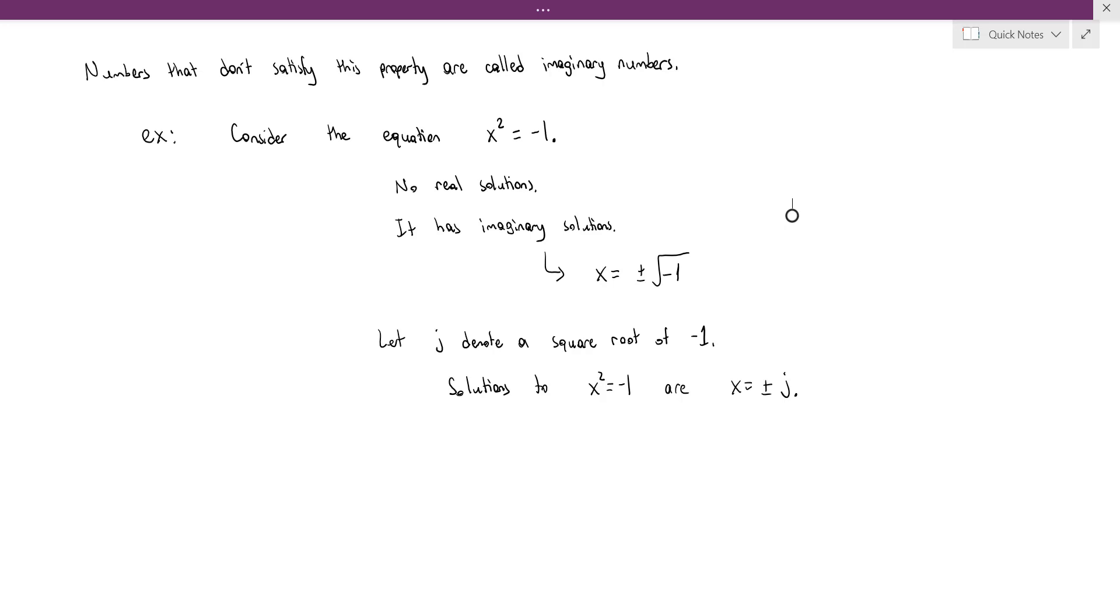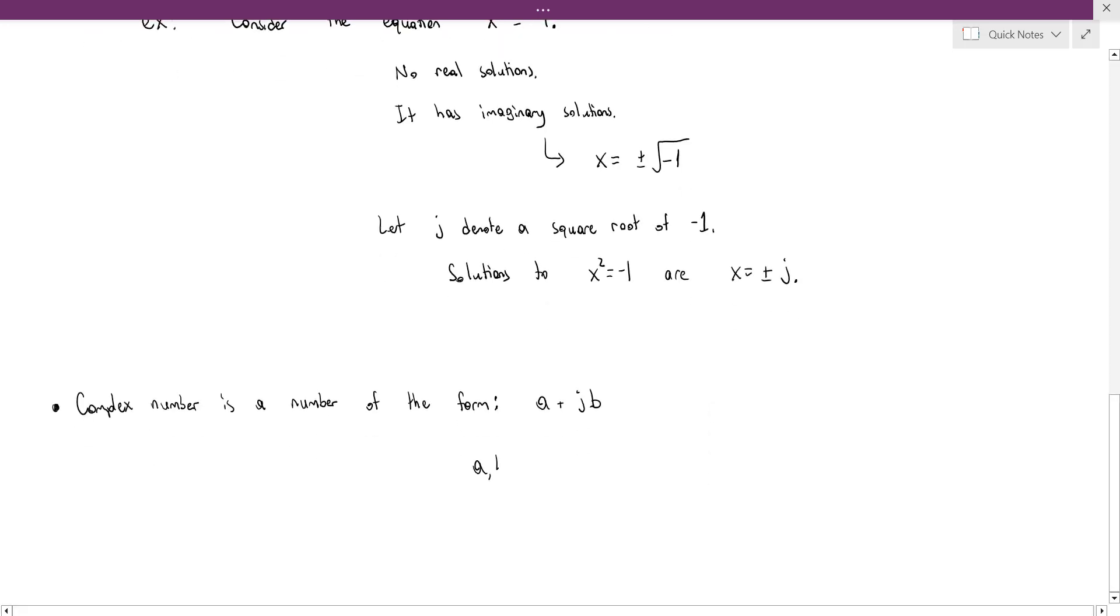But lastly, I haven't quite mentioned what a complex number is yet, so I'm just going to wrap up the video by telling you what a complex number is. A complex number is a number of the form a plus jb, where a and b are any two real numbers, and j is our square root of negative 1. So, j is the imaginary number. So, a complex number is a combination of real numbers and imaginary numbers.